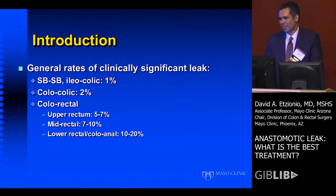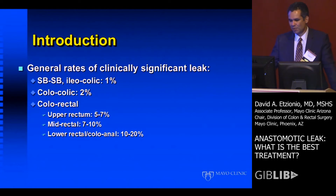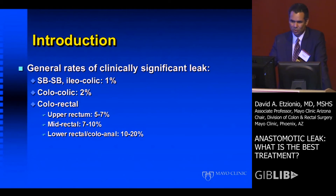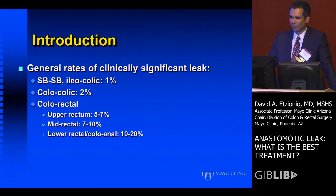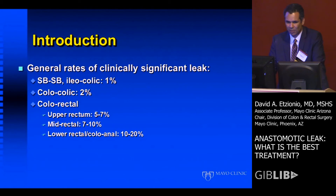The rates of a clinically significant anastomotic leak vary widely, but in general, these are the numbers I give patients when doing preoperative informed consent. For small bowel to small bowel or ileocolic anastomosis, I usually quote about a one or two percent leak rate. For coloColics, I'll quote two, perhaps up to five percent. For colorectal anastomosis, the most important aspect governing estimated risk is the height within the rectum of your anastomosis. Upper rectal anastomosis: five to seven percent. As you move lower, much higher — and therein lies the justification for potential preoperative or intraoperative diversion.